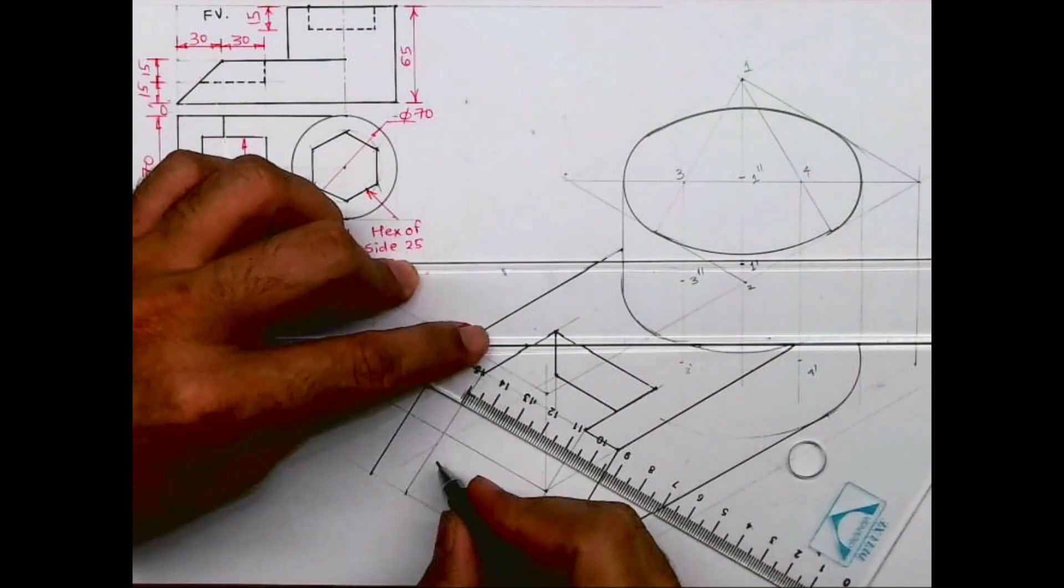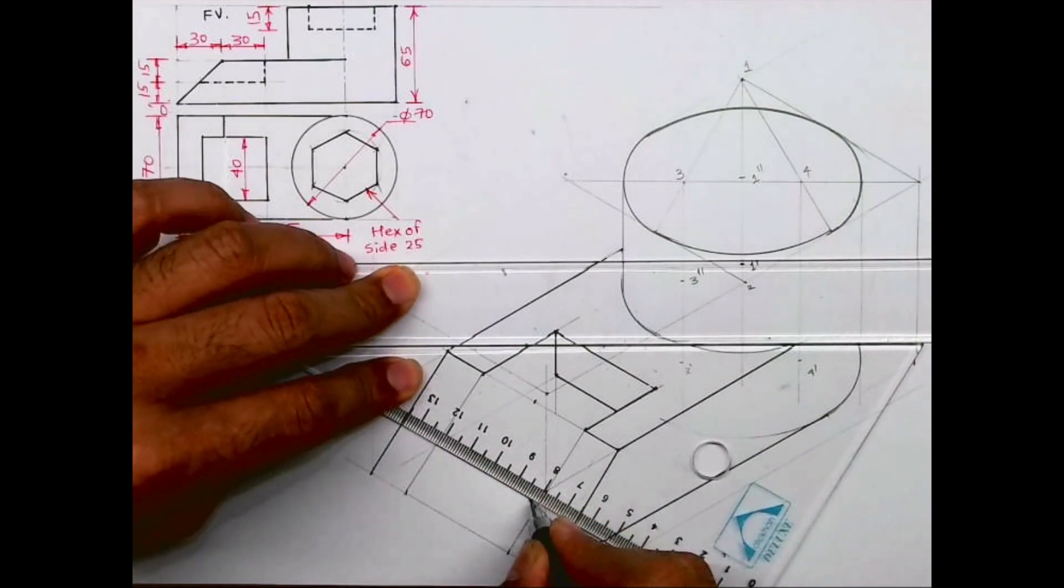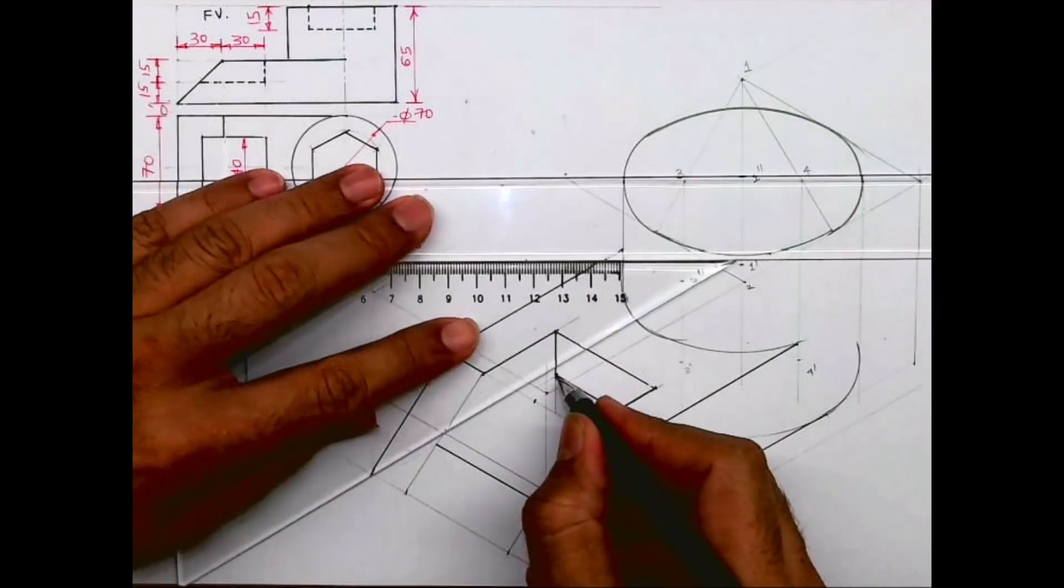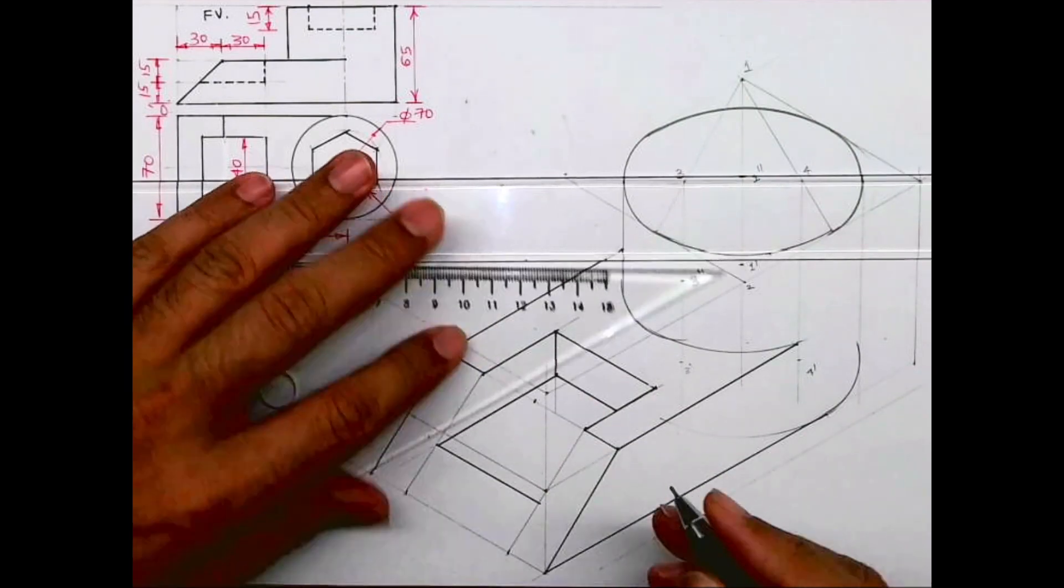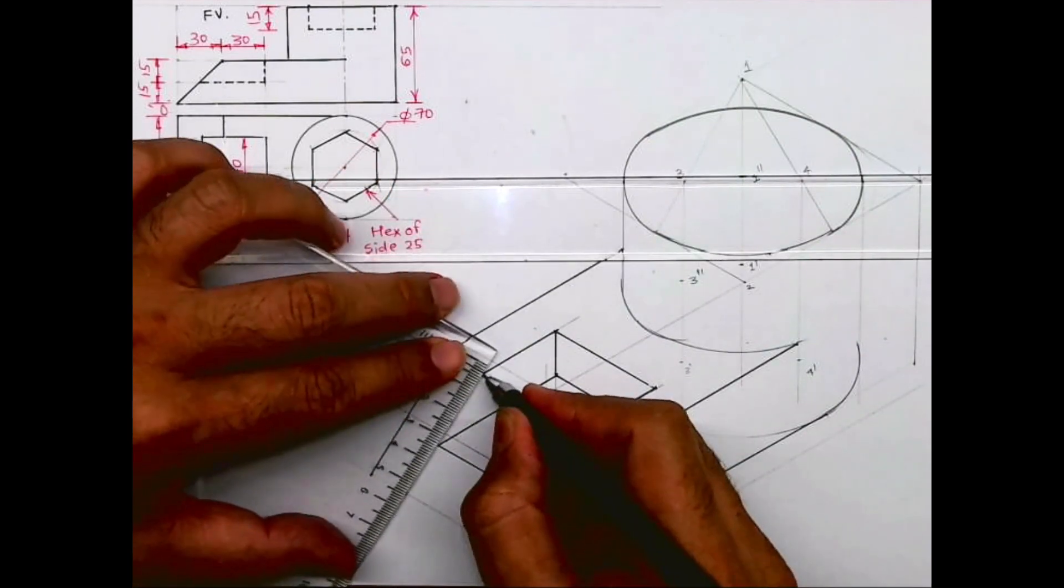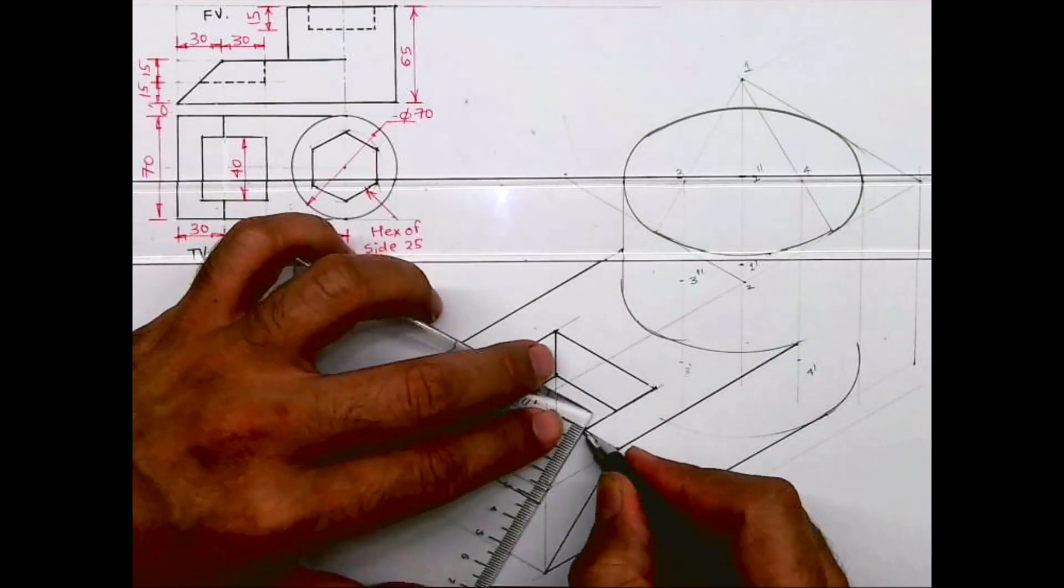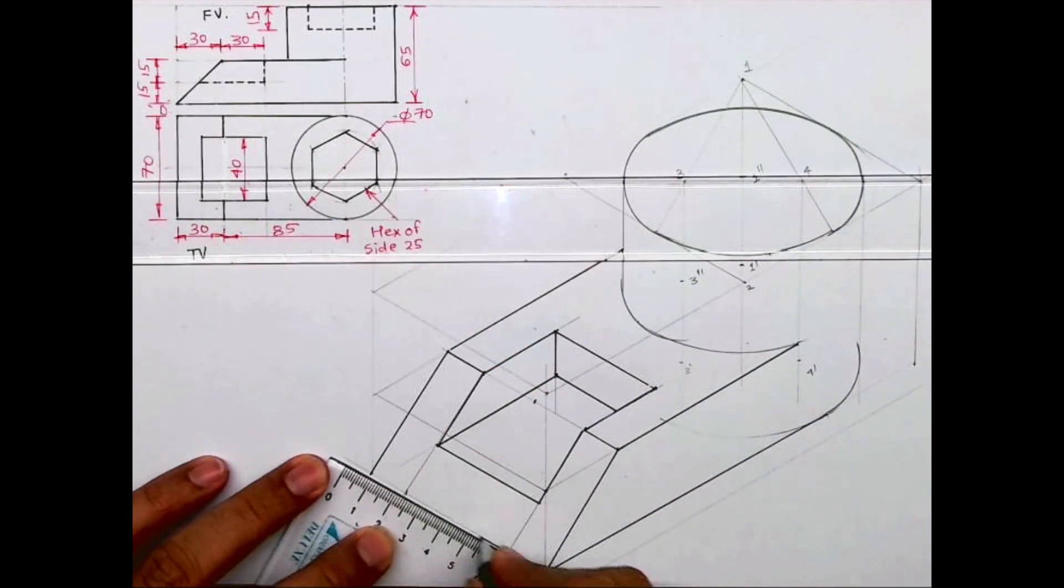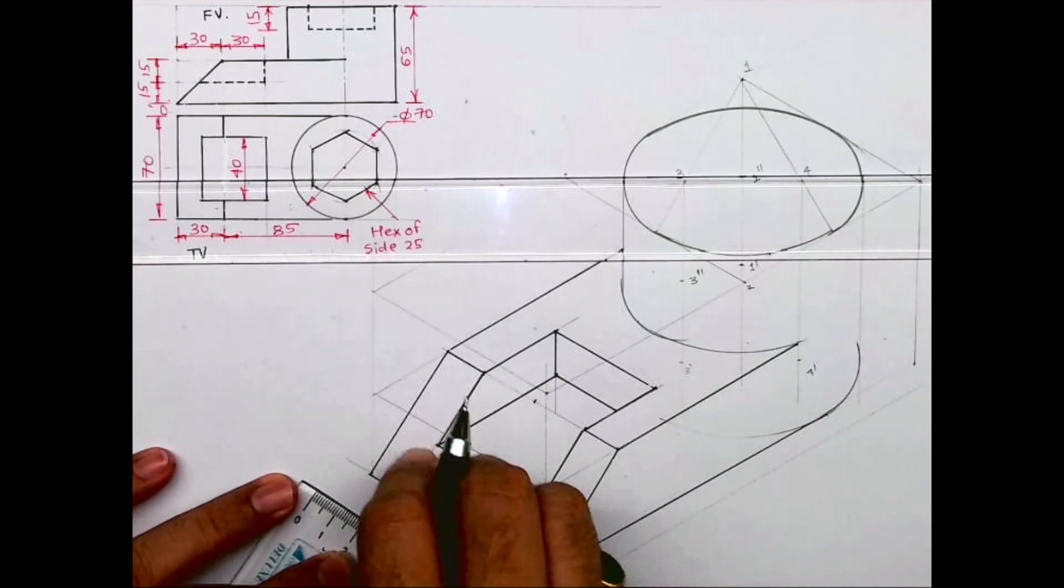So wherever that line is intersecting, that would be slope. See this. So we've got this part, slope part.